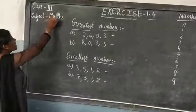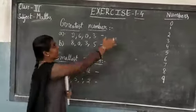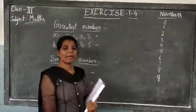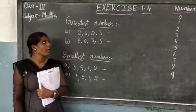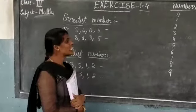Children, third class, exercise 1.4. Over, no children, now 1.4. Ok children.